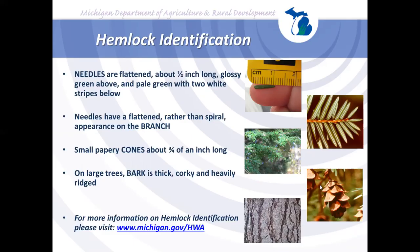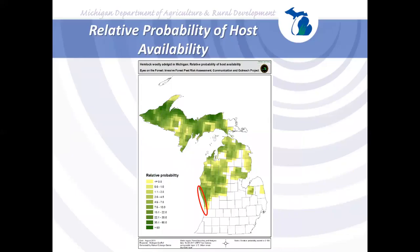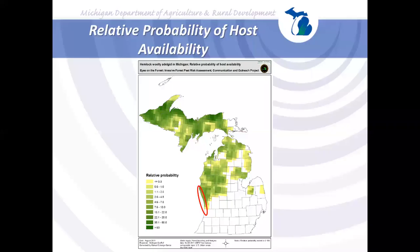When facing a pest situation, determining where the host material is located is critical. Maps showing hemlock distribution are being developed, but there is still much work to do. The current map shows little coverage in the southern lower peninsula—not because hemlock isn't there, but due to a lack of good data. Urban hemlock is especially difficult to track. A red oval on the map outlines the area of current known infestations on the west side of the lower peninsula.